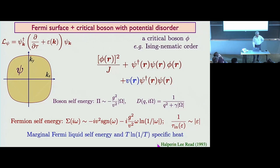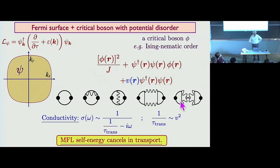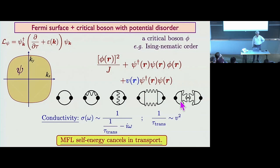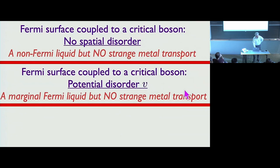But now you try to compute transport — you go back and compute exactly the same diagrams — and you find that Kohn's cancellation still kind of happens; there's a remnant of it. So even though the self-energy is a marginal Fermi liquid, the conductivity is just like a Fermi liquid: it has only the elastic scattering piece. The self-energy doesn't feed into any transport properties at least at this order of calculation, in these Eliashberg–Larkin–Migdal–Thompson type diagrams.